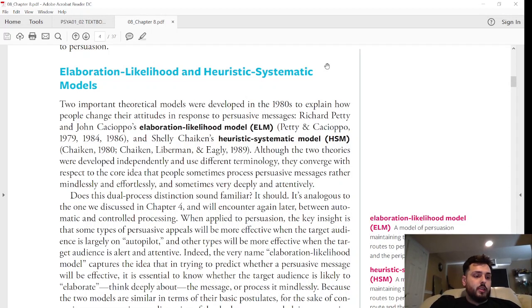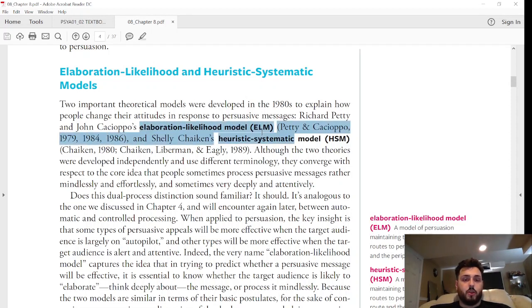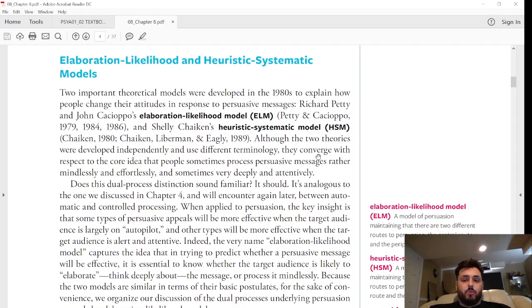Two important theoretical models were developed in the 80s to explain how people change their attitudes in response to persuasive messages. Richard Petty and John Cacioppo's elaboration likelihood model, which is one of the models we'll be talking about, and Shelly Chaiken's heuristic systematic model.